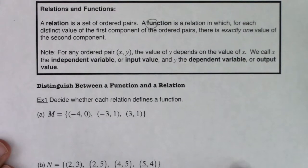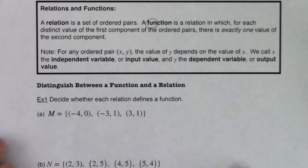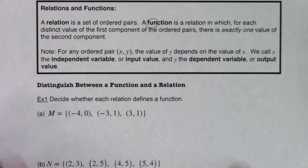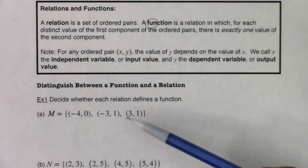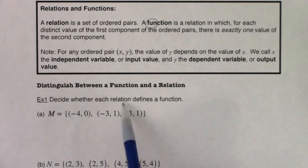So what we want to do is they gave us a list of ordered pairs. This is just starter function problems. We're going to move beyond ordered pairs. But with these ordered pairs, let's decide whether each relation defines a function. Any set of ordered pairs in A, B, or C, they're automatically relations because all relations are sets of ordered pairs. You see (-4, 0), (-3, 1), and (3, 1). So I have three ordered pairs in here.